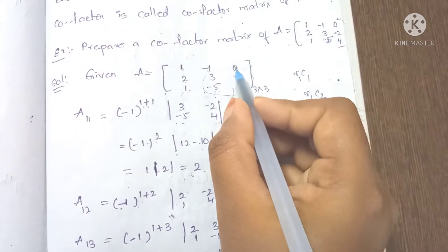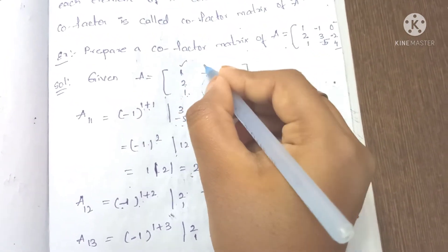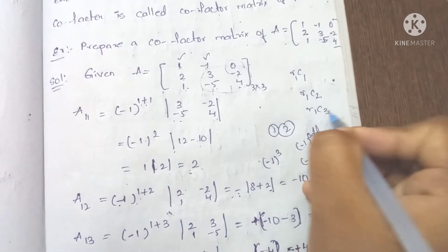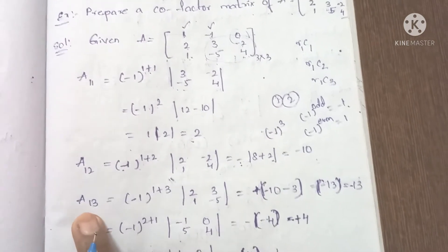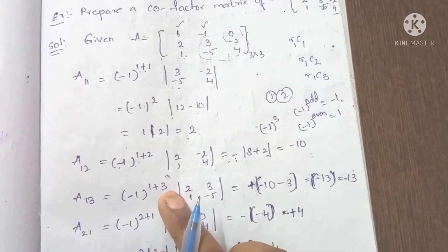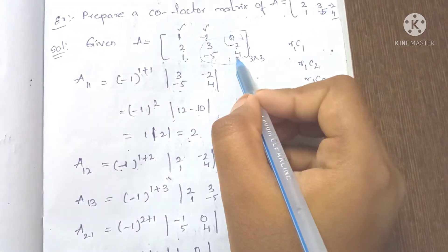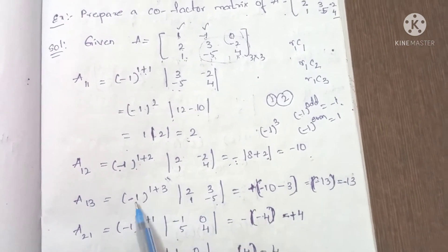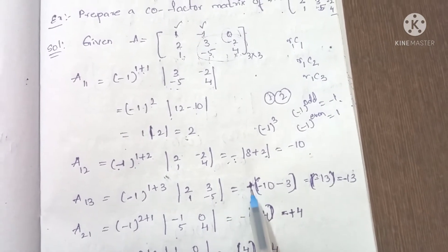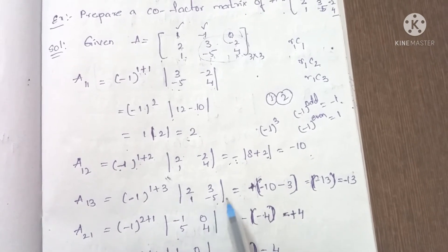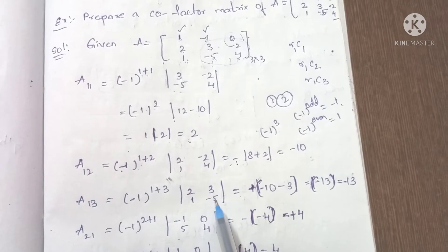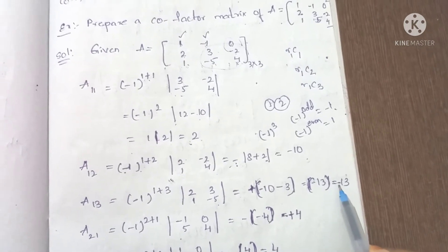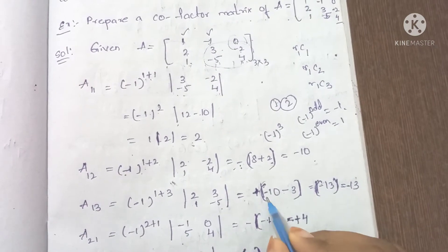Third element is 0 at row 1, column 3. C13 = (-1)^(1+3) times the minor. Since (-1)^4 = 1 (even), C13 = 1 times the minor. Eliminating row 1 and column 3, the remaining submatrix is [-1, 3; 0, -2]. Determinant = (-1)×(-2) minus 3×0 = 2 minus 0. Also considering: ad minus bc = 2×(-5) minus (-1)×3 = -10 minus (-3) = -13. So C13 = -13.